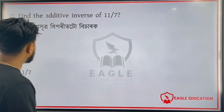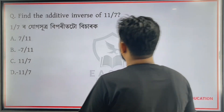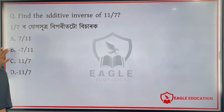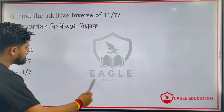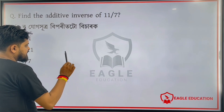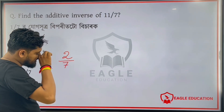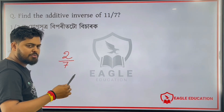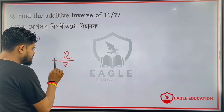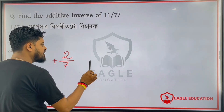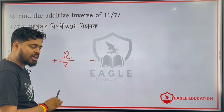First question: find the additive inverse of 11 by 7. What is the additive inverse? The additive inverse is called the opposite sign — plus becomes minus, minus becomes plus.